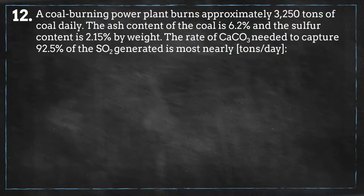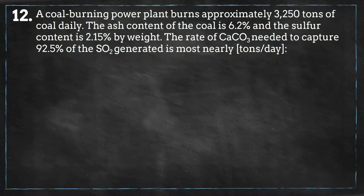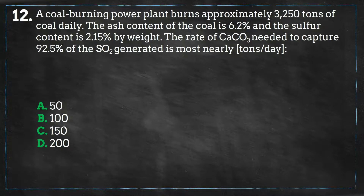A coal-burning power plant burns approximately 3,250 tons of coal daily. The ash content of the coal is 6.2% and the sulfur content is 2.15% by weight. The rate of calcium carbonate needed to capture 92.5% of the sulfur dioxide generated is most nearly: A) 50, B) 100, C) 150, or D) 200.